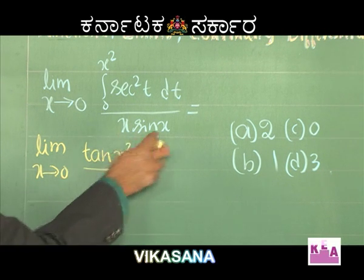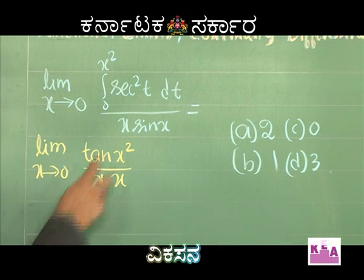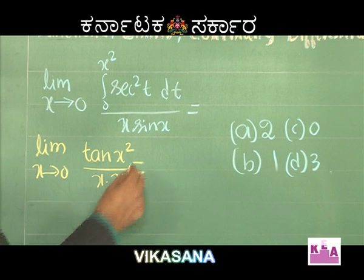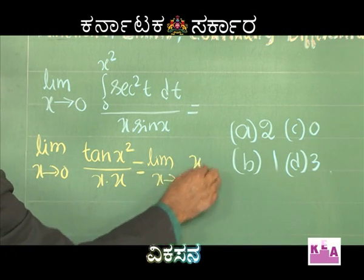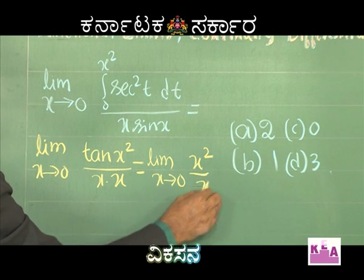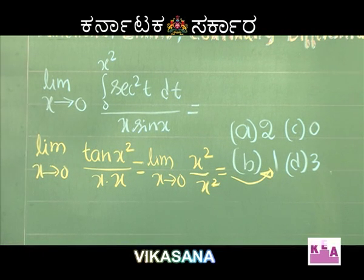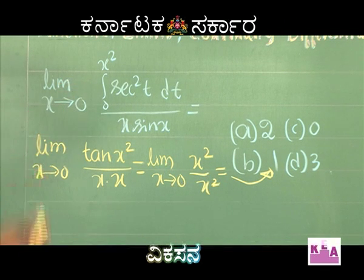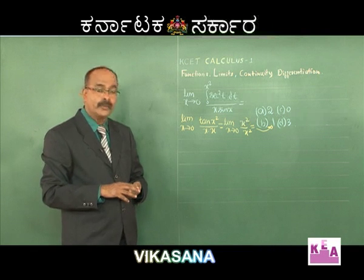As x tends to 0, sin(x) tends to x, and tan(x²) tends to x². So the expression becomes x² divided by x·x, which equals x²/x² equals 1. Therefore option B is correct. There are also problems of this type using differentiation under the integral sign, which we shall discuss later.